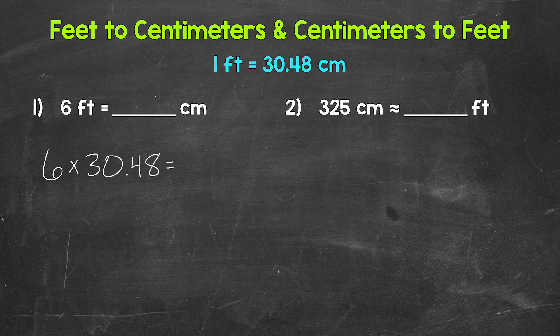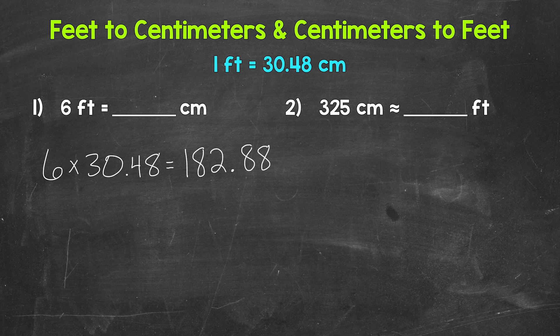When we convert from feet to centimeters, we multiply by 30.48. Now six times 30.48 gives us 182.88. So six feet equals 182.88 centimeters.